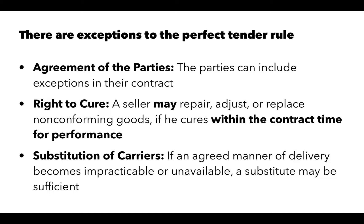Another exception involves substitution of carriers. If an agreed manner of delivery becomes impracticable or unavailable, a substitute may be sufficient. For example, if goods were arranged to ship by FedEx and FedEx drivers go on strike, delivering by UPS — if that is a commercially reasonable substitute — is permissible even if it does not conform to the original carrier term. The seller is normally responsible for any additional shipping cost, unless the contract states otherwise.